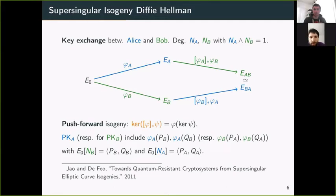To make this happen, you also need to publish torsion point images. Alice publishes φA(PB), φA(QB), where PB and QB generate the B-torsion. Bob publishes φB(PA), φB(QA), where PA and QA generate the A-torsion.